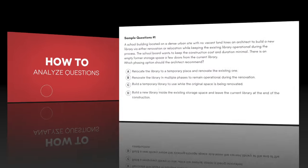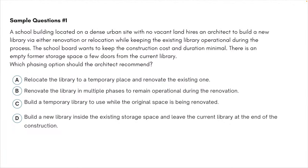I would like to show you some of those strategies using a sample question. The question says: a school building located on a dense urban site with no vacant land hires an architect to build a new library via either renovation or relocation, while keeping the existing library operational during the process. The school board wants to keep the construction cost and duration minimal. There's an empty former storage space a few doors from the current library.